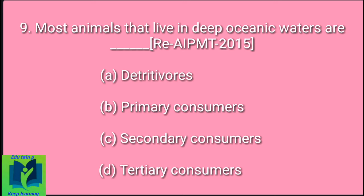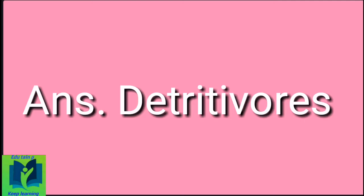Most animals that live in deep oceanic waters are: Option A: Detritivores. Option B: Primary consumers. Option C: Secondary consumers. Option D: Tertiary consumers. Answer: Detritivores.